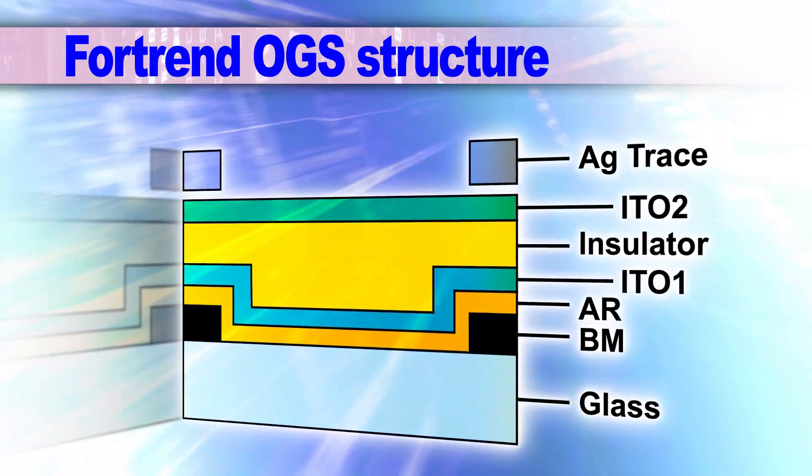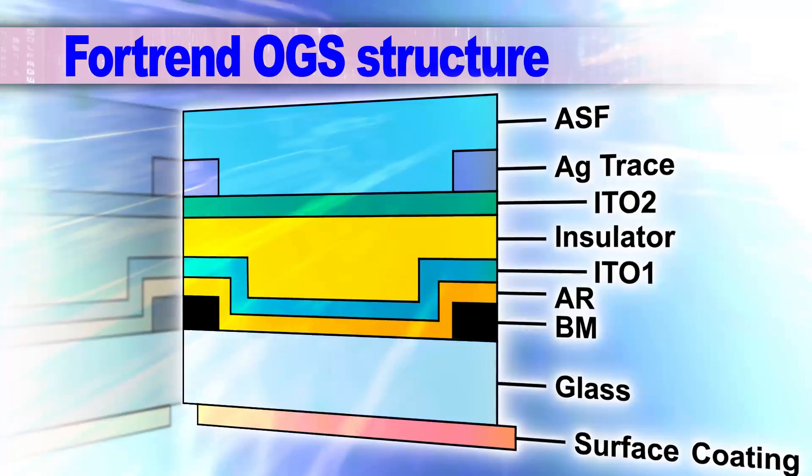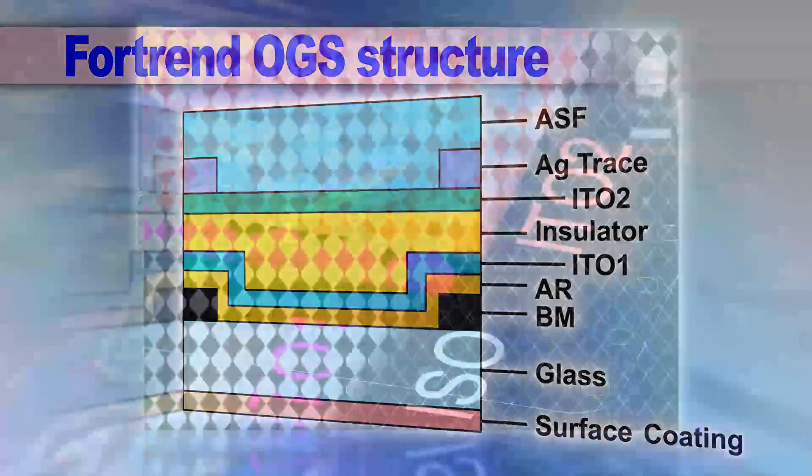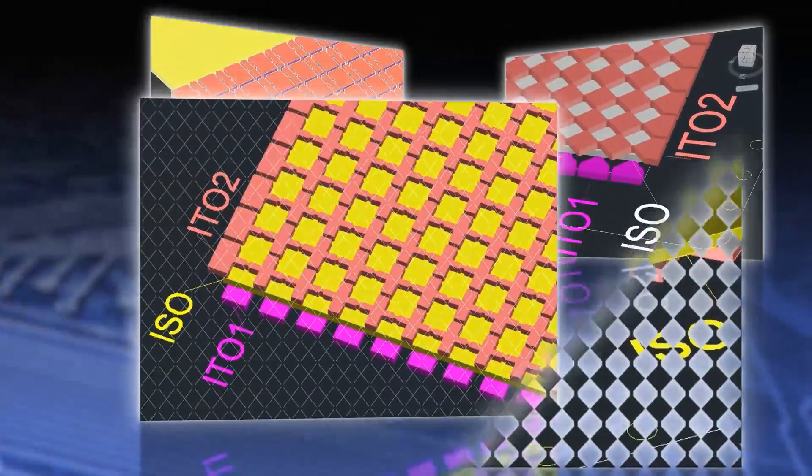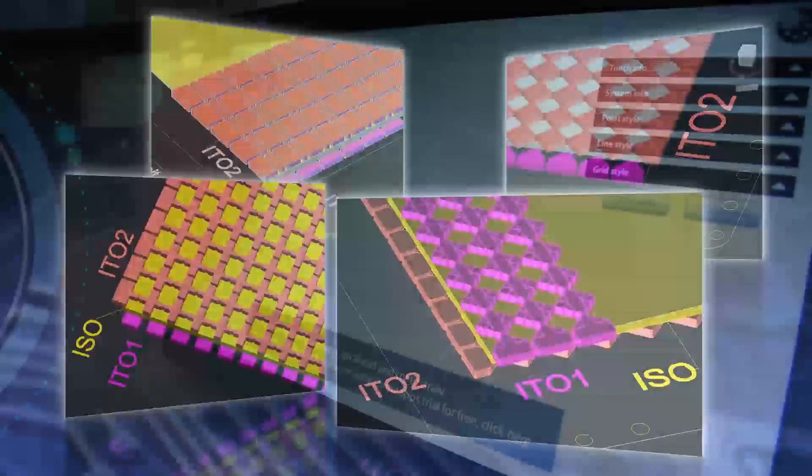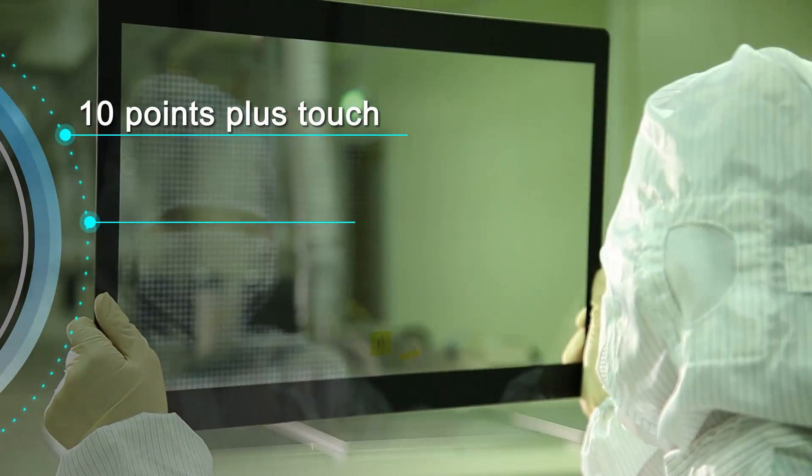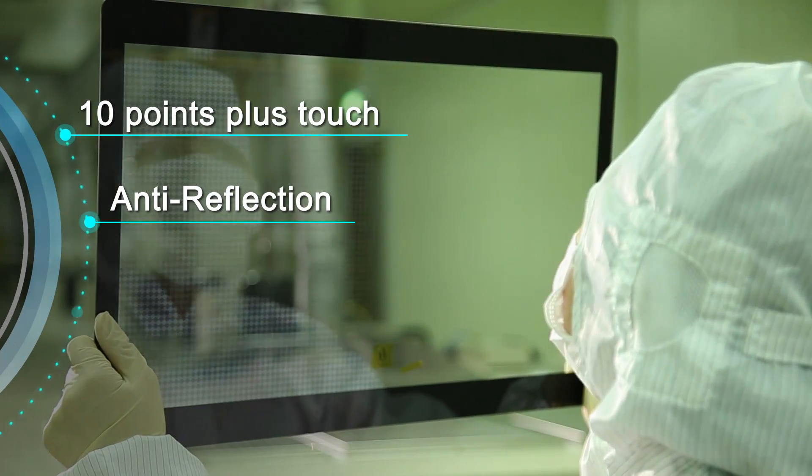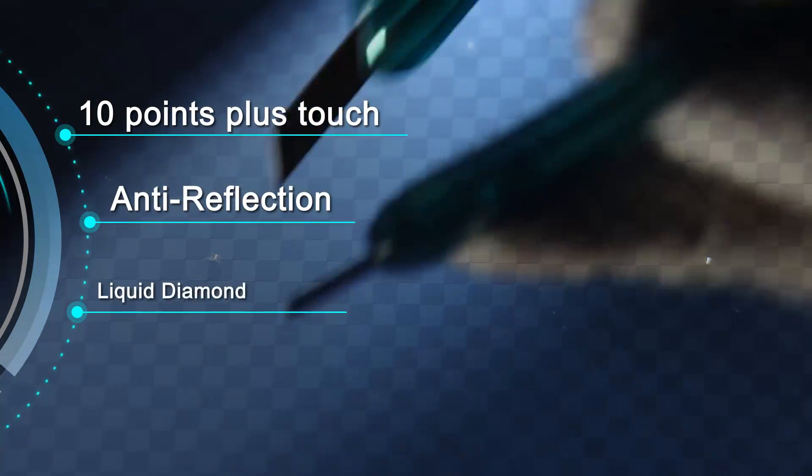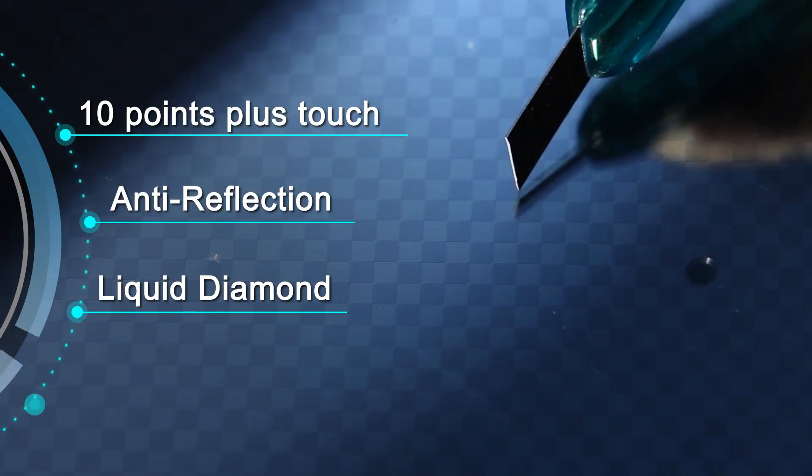Supported by Fortran unique multi-layer patent, different OGS pattern and structure can meet custom made requirements. Our OGS are all 10 points plus touch and anti-reflection coating. Customers can choose liquid diamond or pen writing.